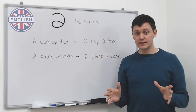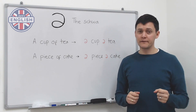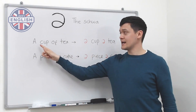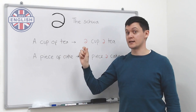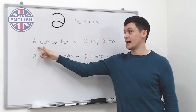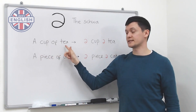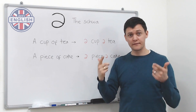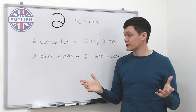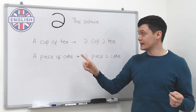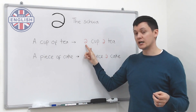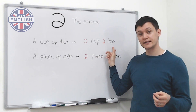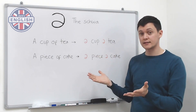Let's start with two sentences you're probably familiar with. The first one is 'a cup of tea.' We don't say it fully like that because it would be too difficult and not very fluent. Instead, those grammar words become a schwa sound, so we say 'a cup a tea.'